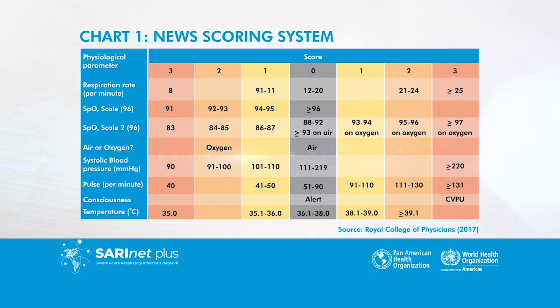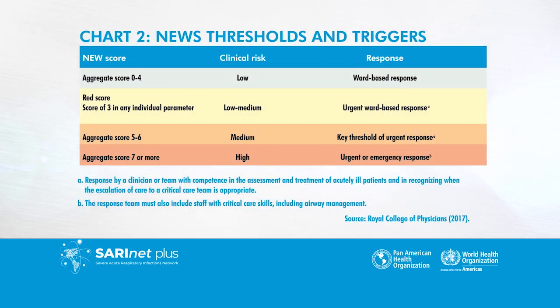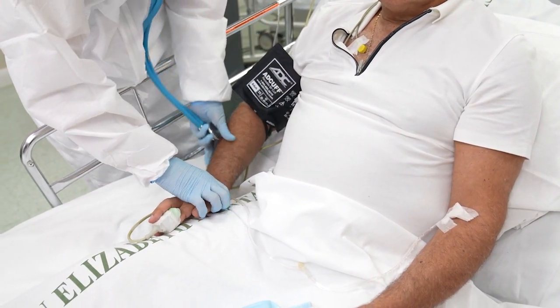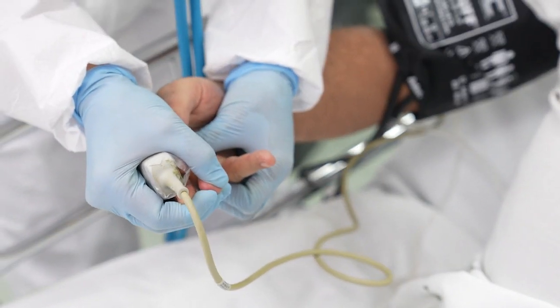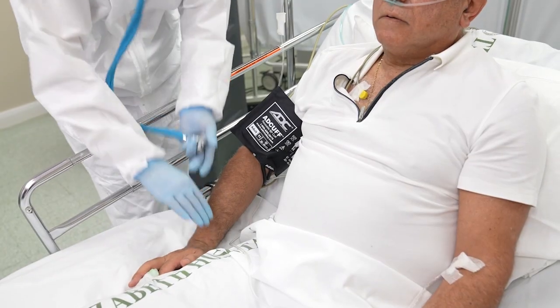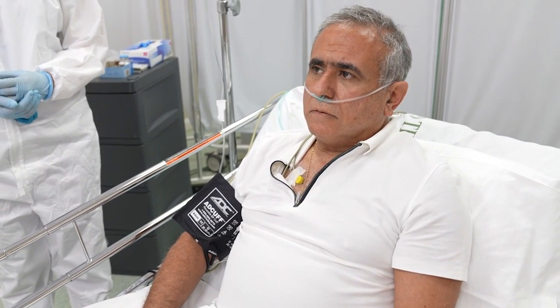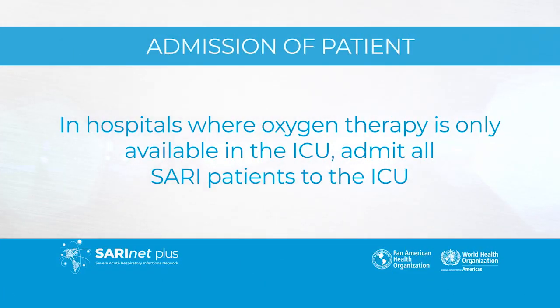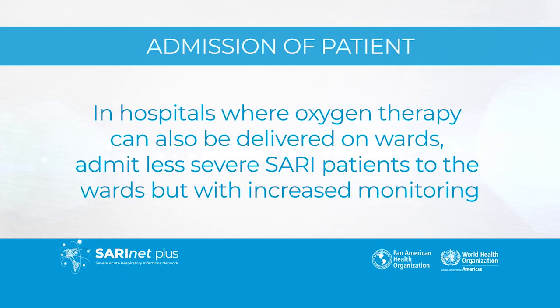Severity and clinical response can be assessed with early warning scores such as NEWS. It assesses clinical risk and describes a proper clinical response and need for monitoring a severely acute ill patient. Patients should be admitted to ICU based on severity of clinical condition and resource availability. In hospitals where oxygen therapy is only available in the ICU, admit all SARI patients to the ICU. In hospitals where oxygen therapy can also be delivered on wards, admit less severe SARI patients to the wards but with increased monitoring.